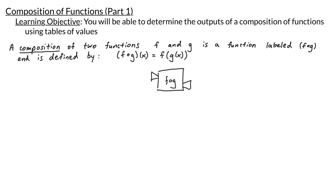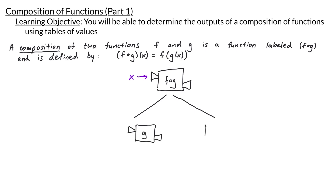We have two funnels — one for the input and one for the output. To understand what this composition does, we think about what happens when we input some number x into this machine. If we were to open up this machine, inside the f composed with g machine there are actually two machines inside.